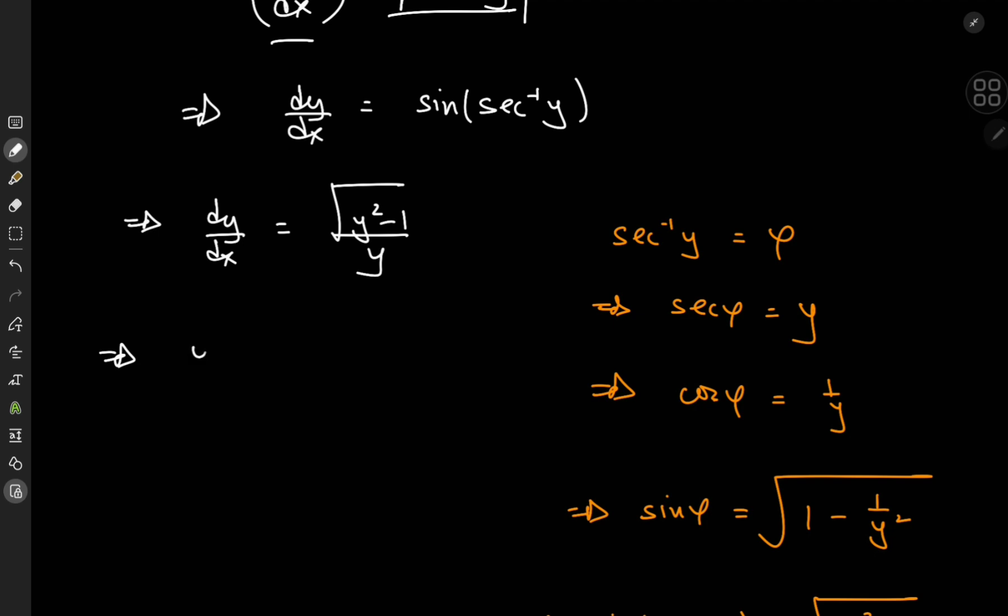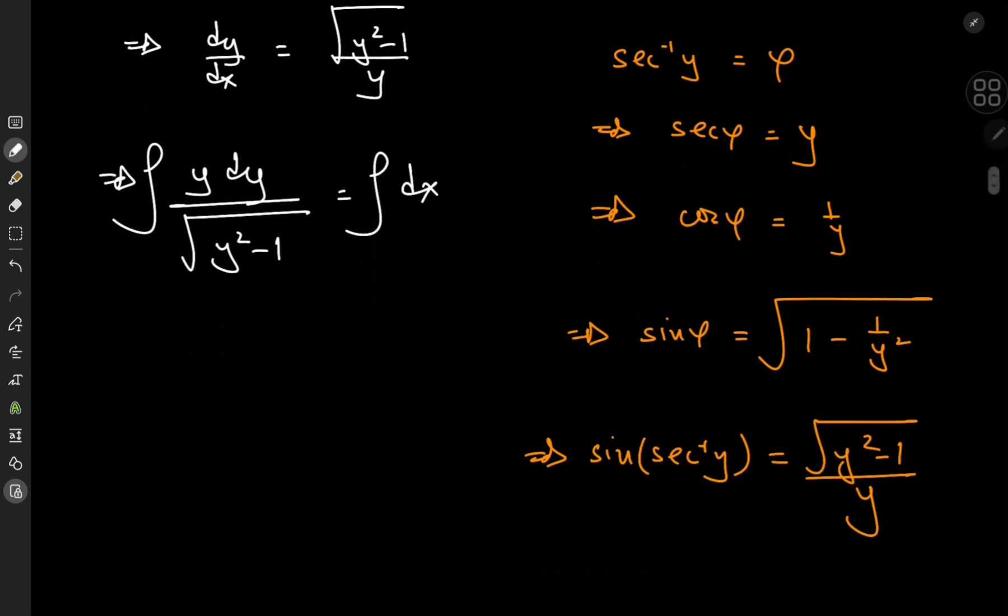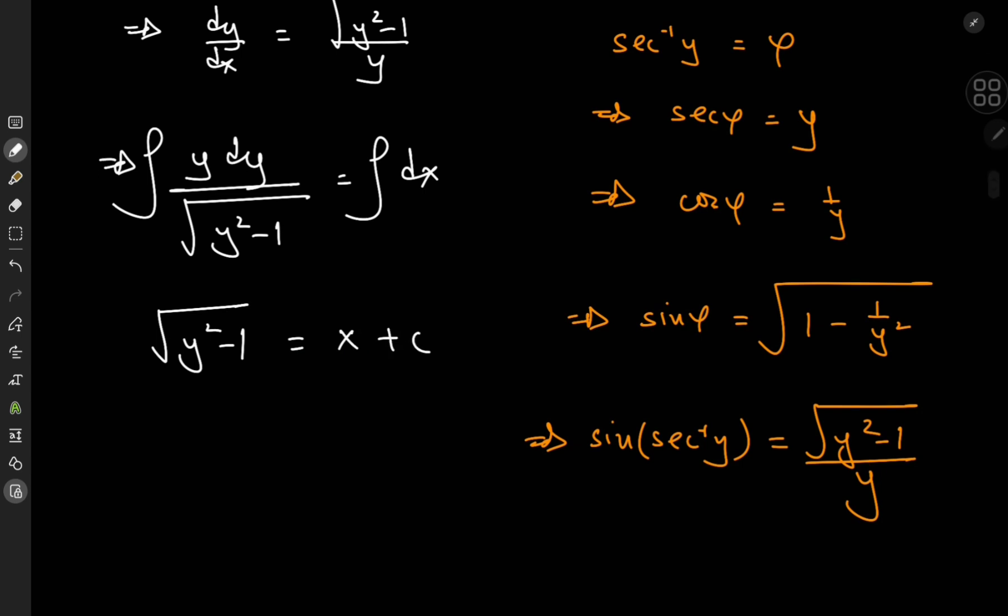So let me write this as y dy divided by the square root of y squared minus 1, and here I have dx. And integrating the whole thing gives me on the left hand side, I'll just have y squared minus 1. And on the right, we'll have x plus a constant of integration c.